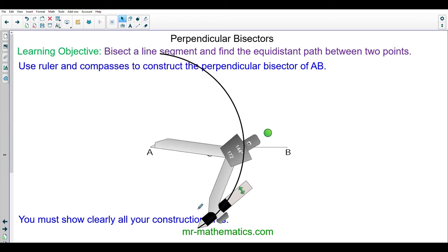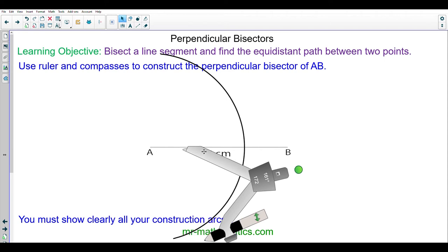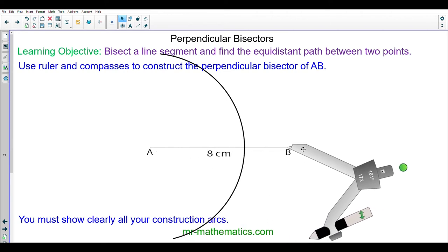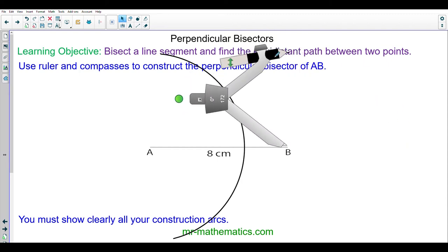So I'll create the arc above and below the line. Now I'm going to move the compass to point B and I'm going to create an arc of equal length.